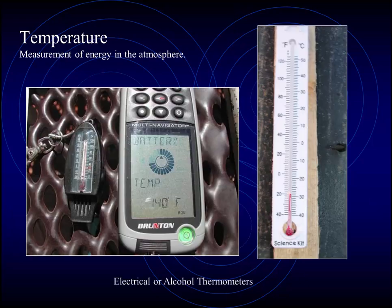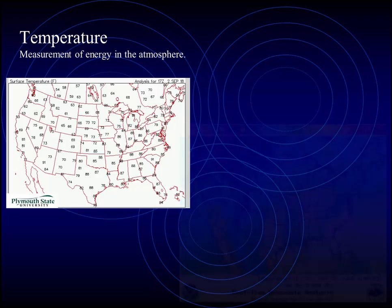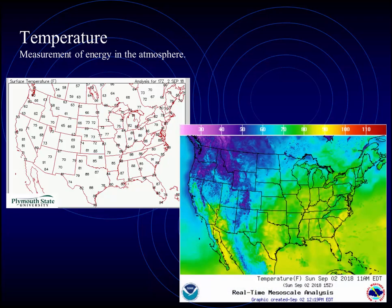We discussed temperature as the measurement of energy in the Earth's atmosphere. It can be measured with either electrical or alcohol thermometers. Numeric temperature data may be plotted out on a map or color coded, such as we see here, giving us a graphical representation of what the temperature is like in any location in the country.